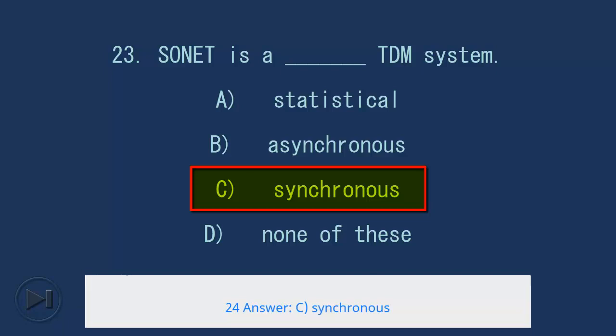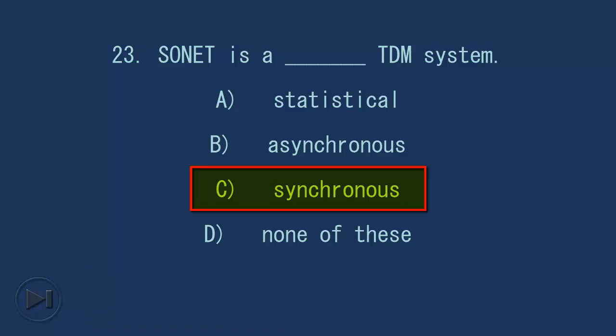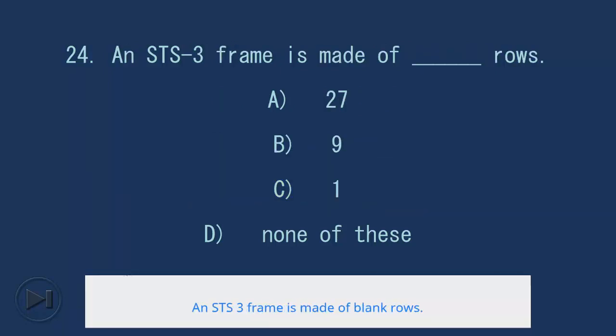24. An STS-3 frame is made of blank rows. A. 27, B. 9, C. 1, D. None of these. Answer: B. 9.